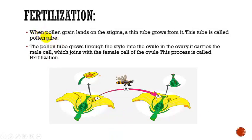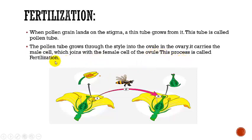Fertilization is the process by the union of male and female cells. When a pollen grain lands on the stigma of a flower, a thin tube grows from it. This tube is called the pollen tube. The pollen tube grows through the style into the ovule in the ovary. It carries the male cell, which joins with the female cell of the ovule. This process is called fertilization.